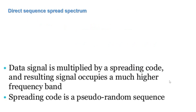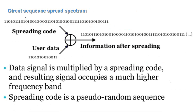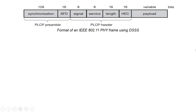The second technology is direct sequence spread spectrum. The data signal is multiplied by a spreading code and the resulting signal occupies a much higher frequency band. A spreading code is a pseudo-random sequence. Here, the data plus the spreading code are added together and the information is spread for security purposes.